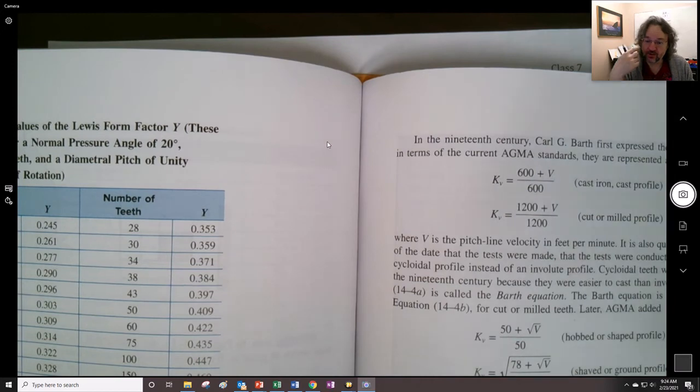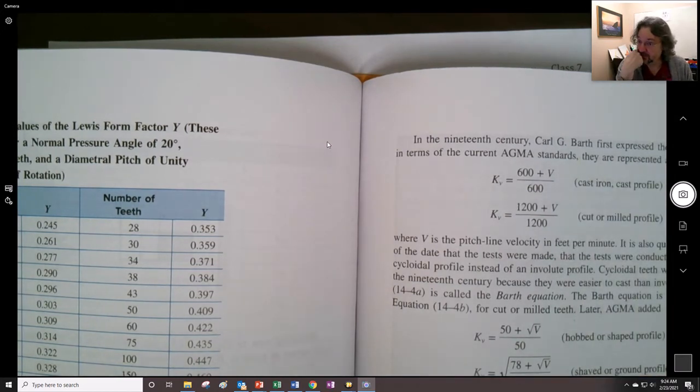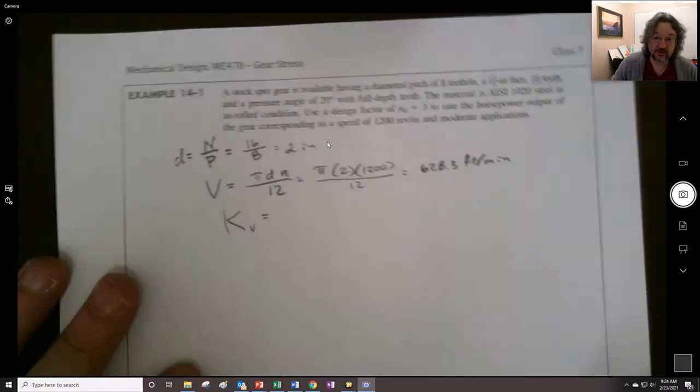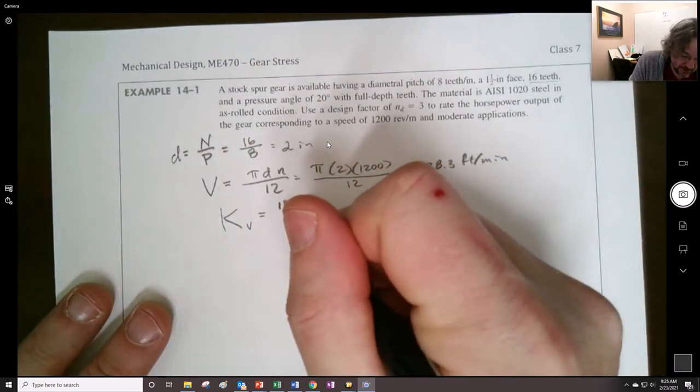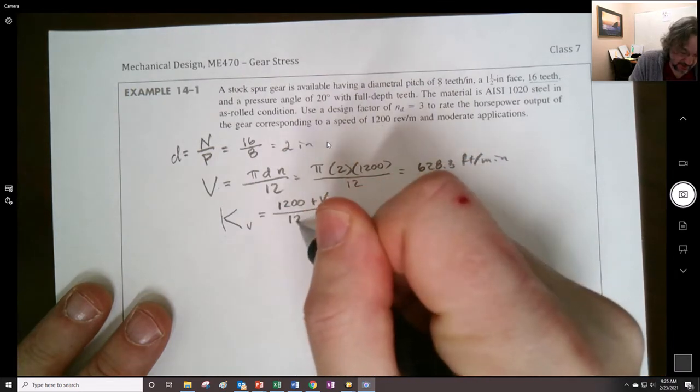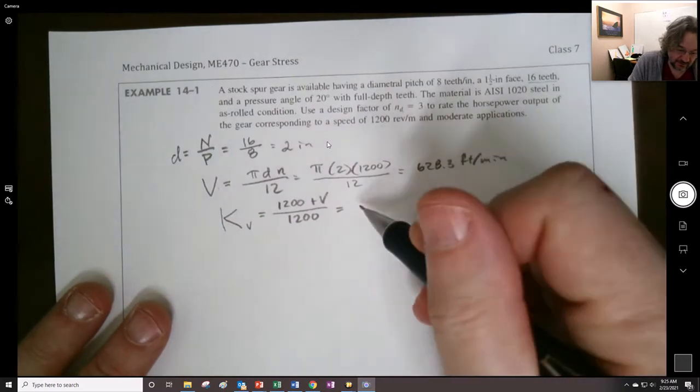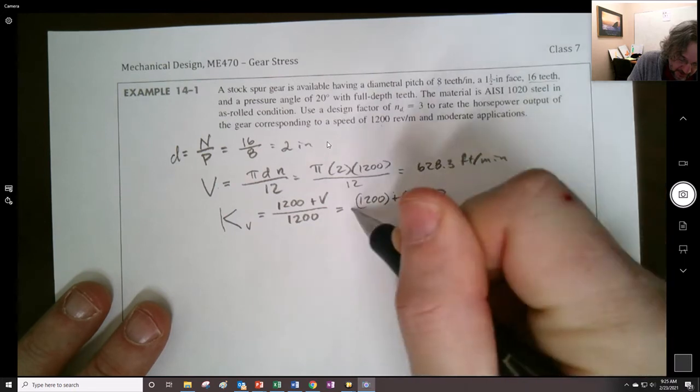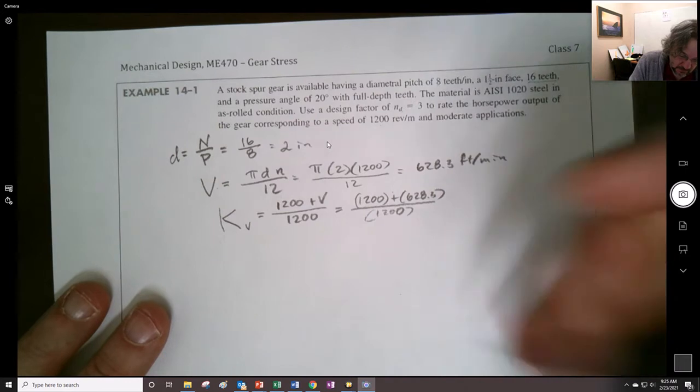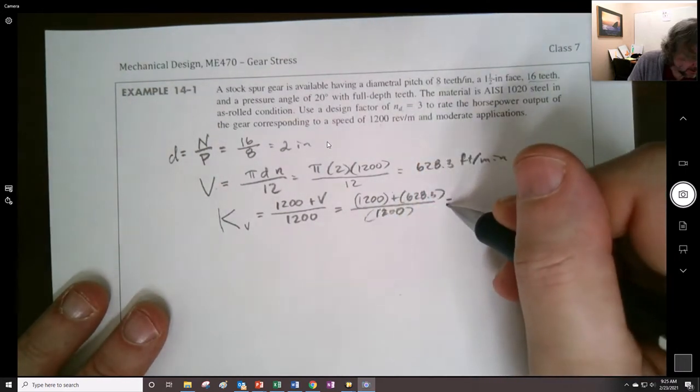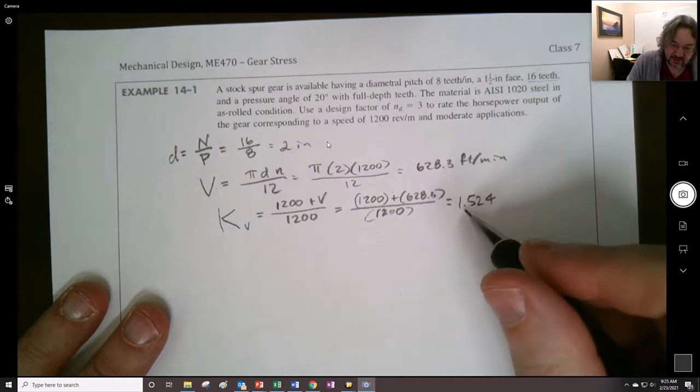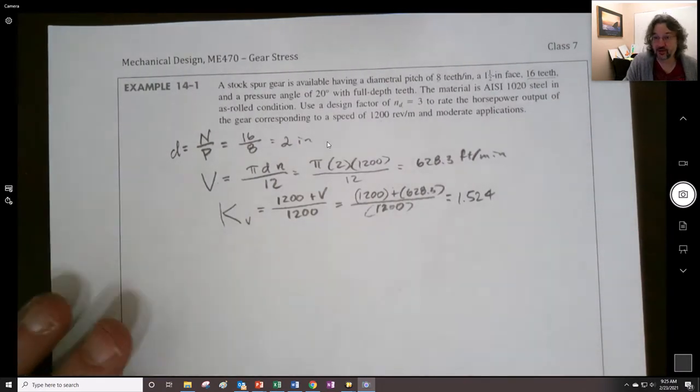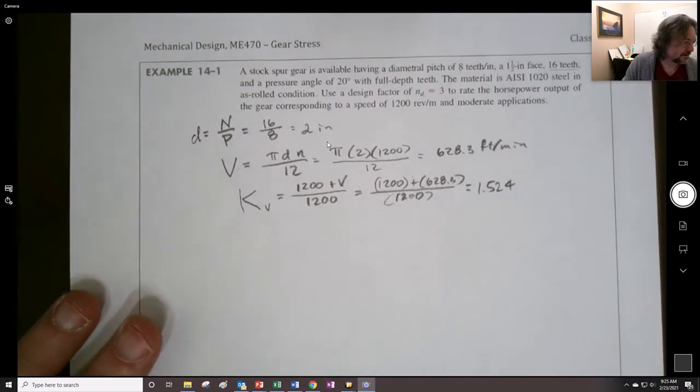When in doubt, you might need to do it in a couple different ways and then make a comparison and state what the difference was. If you don't know something, you have to still go through with it. You can't just throw your hands up in the air. So what they decided to do was 1,200 plus the pitch line velocity divided by 1,200. Remember, this is a dynamic factor. So 1,200 plus 628.3 divided by 1,200. That equals 1.524. This is always going to be something greater than 1. You expect it to be something greater than 1.2 maybe. You're not going to get really below that too much unless they're really well-made teeth.